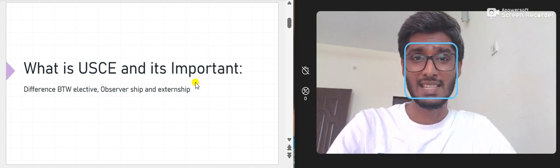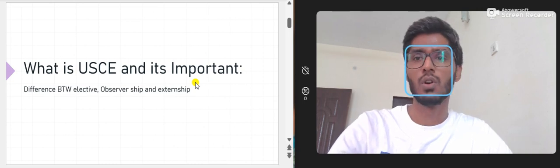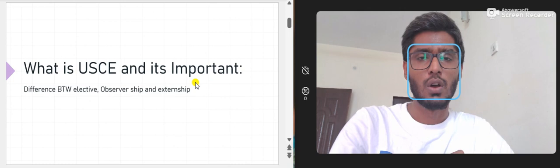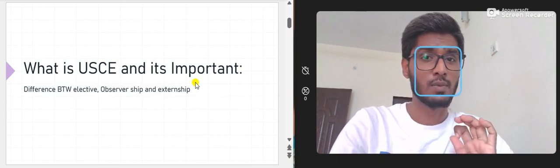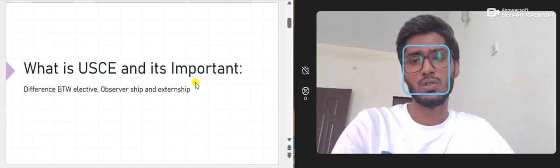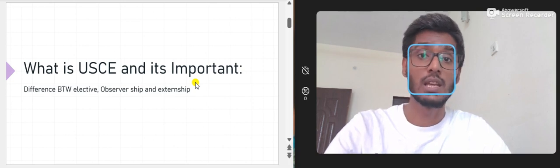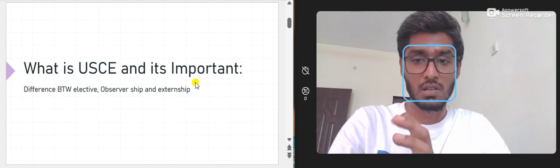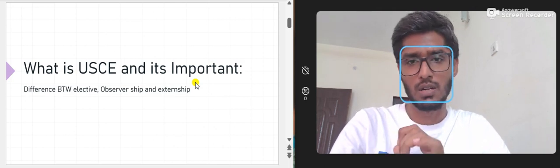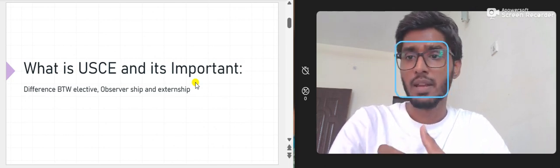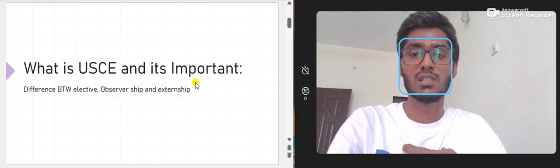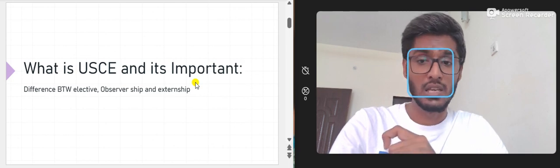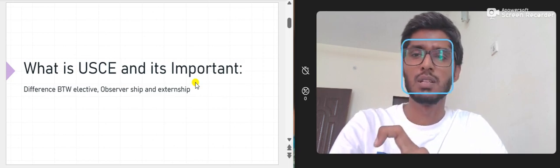I always talk about strategy — strategy is something that can differentiate a good candidate from an excellent one. After getting done with USMLE Step 1, you should start Step 2 CK, and alongside that you should work on your CV. Your CV should include research or USCE. People applying from developing countries often don't have research experience.